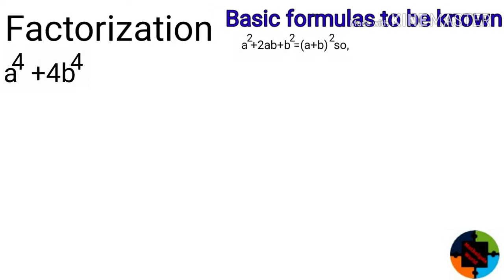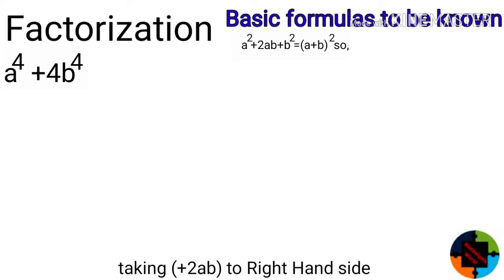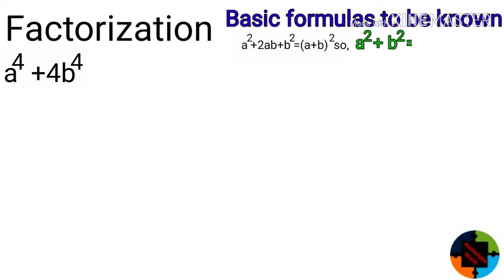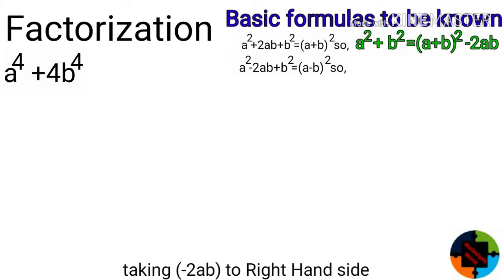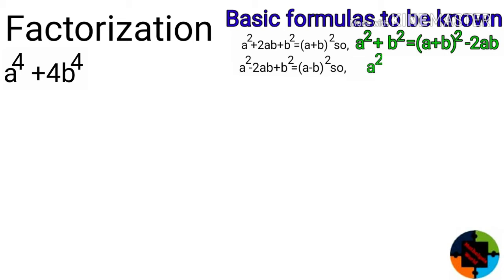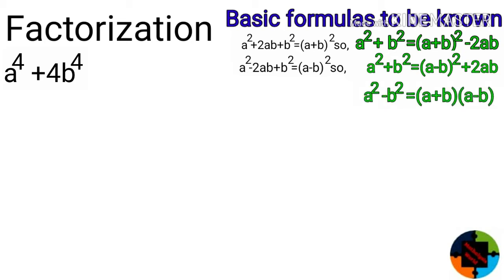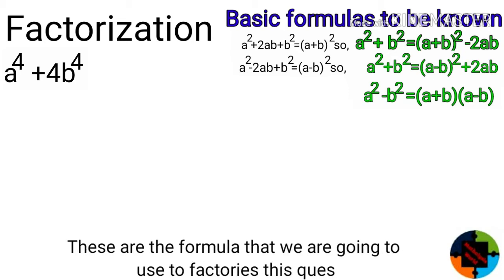First, a squared plus 2ab plus b squared equals a plus b whole squared. So taking minus 2ab to the right-hand side, a squared plus b squared equals a plus b whole squared minus 2ab. Similarly, a squared minus 2ab plus b squared equals a minus b whole squared, so a squared plus b squared equals a minus b whole squared plus 2ab. Also, a squared minus b squared equals a plus b times a minus b.